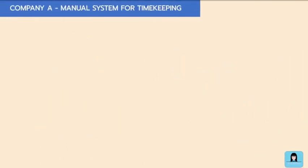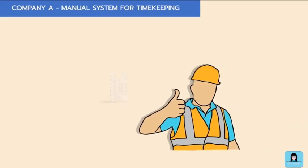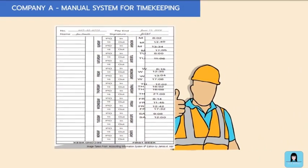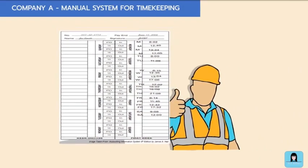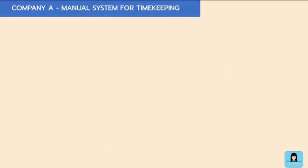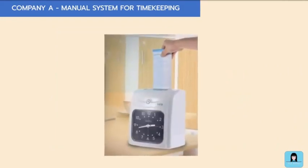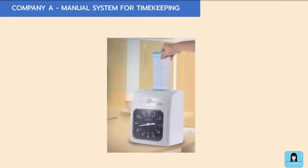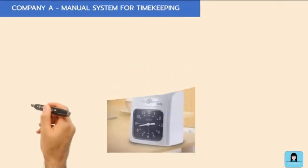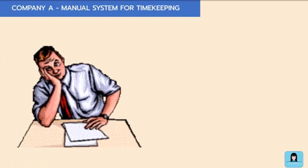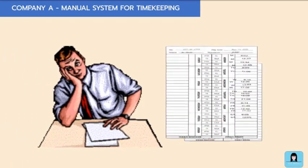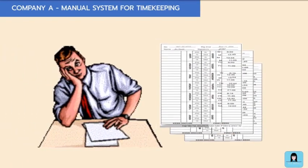In Company A, an employee must get his time card from the shelf near the entrance and punch it on the bundy clock to record his time-in and time-out. At the end of the pay period, a supervisor collects, reviews, and signs the time cards.